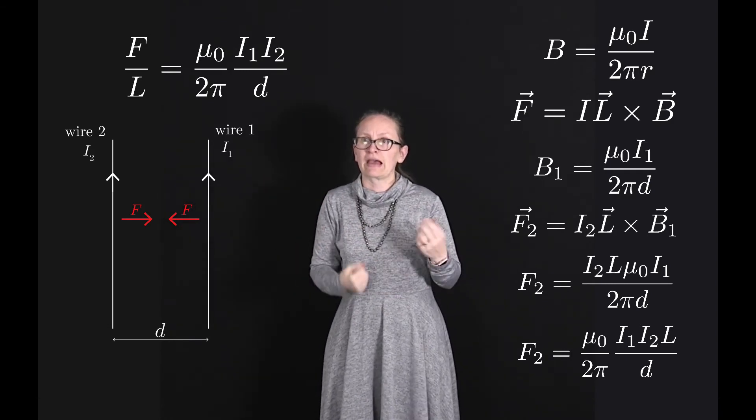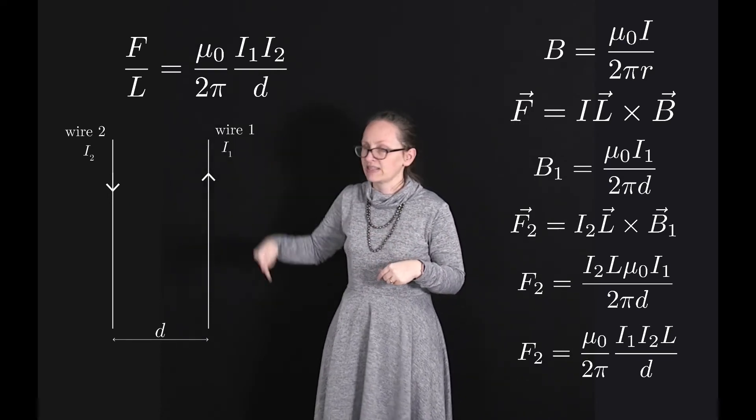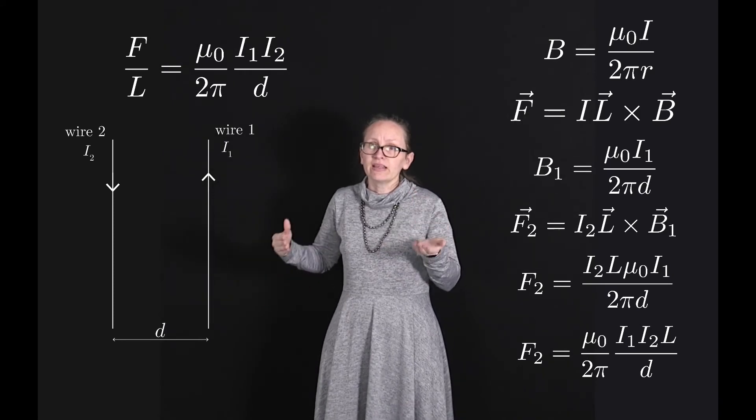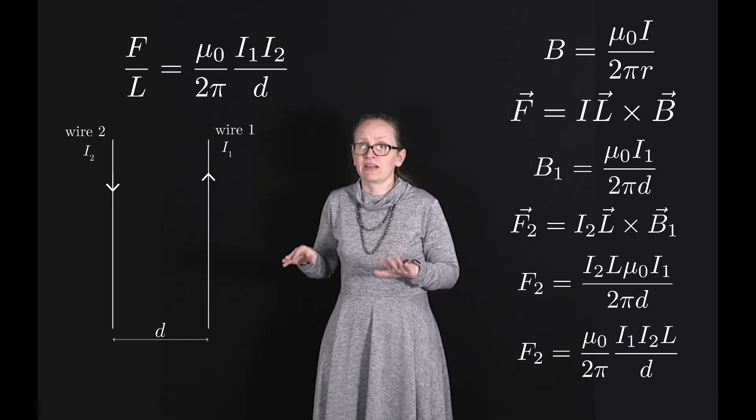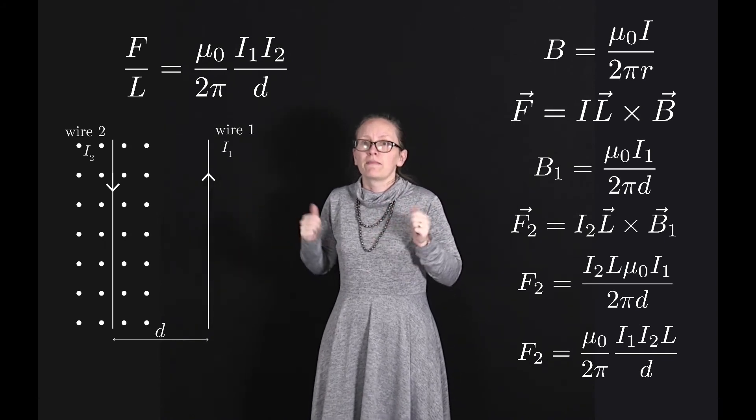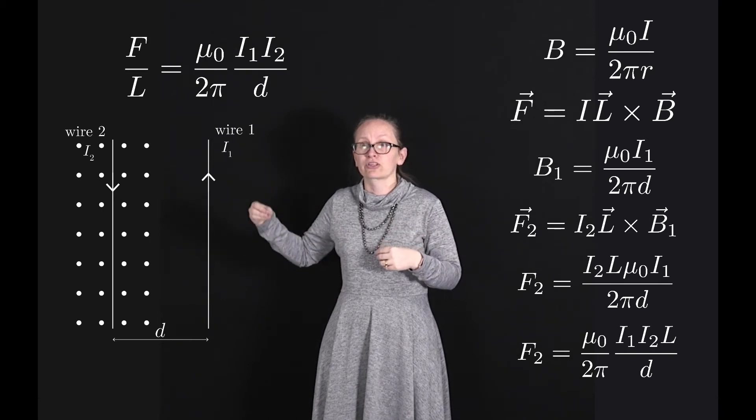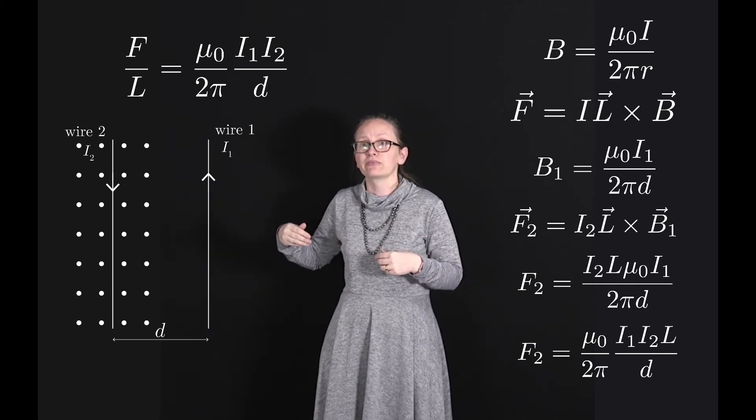Now imagine that we reverse the direction of the current flowing through wire 2, so it's now flowing down the screen. Now in that case the magnetic field which is produced by wire 1 has not changed, but now when we look at our force equation F equals IL cross B and we use our right hand rule,